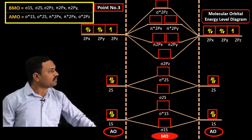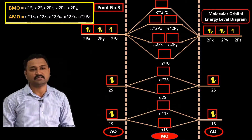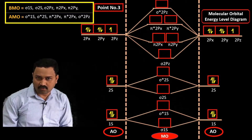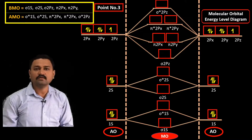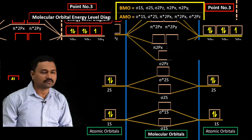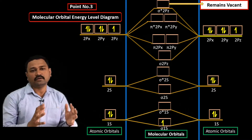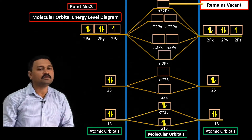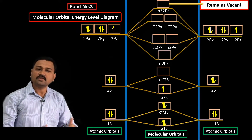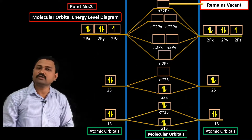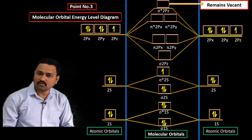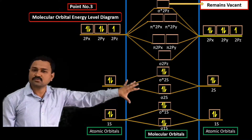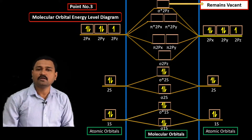These 10 molecular orbitals are arranged from lower to higher energy in the energy level diagram. The total 18 electrons are distributed into bonding and antibonding molecular orbitals following the Pauli exclusion principle and Hund's rule. The first two electrons enter σ1s, the next two enter σ*1s, the next two enter σ2s, and the next two enter σ*2s — so eight electrons are distributed so far.